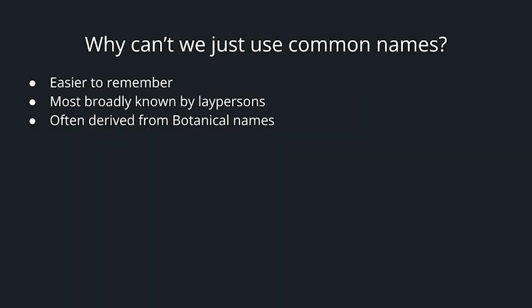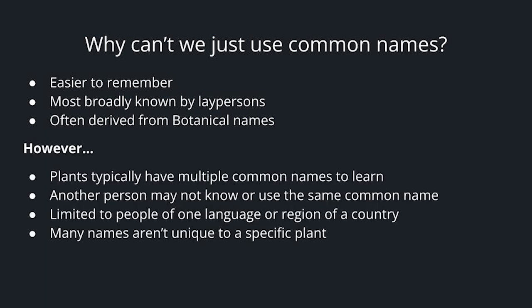So why can't we just use common names? They're easier to remember, they're most broadly known, and often they're derived from botanical names. However, plants typically have multiple common names to learn. Another person may not know or use the same common name that you know. They're limited to people of one language or region of a country, and many names aren't unique to a specific plant.